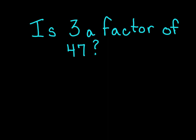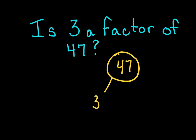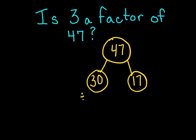Is 3 a factor of 47? If we use number bonds and put 47, we pull out 30 because that's the closest we can get to it, and what's left over is 17. 3 can go into 30 — yes, 10 times. But 3 cannot go into 17. So is 3 a factor of 47? It is not.